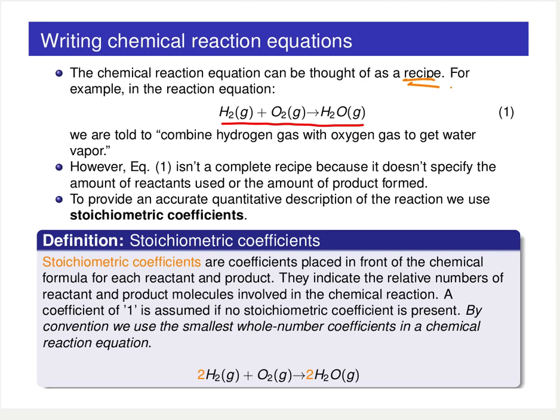The definition of stoichiometric coefficients are simply coefficients placed in front of the chemical formula for each one of those reactants and products. They indicate the relative numbers of reactants and product molecules involved in that chemical reaction. If there's only one of those given reactants or products present in that chemical reaction equation, then we don't actually write out the one. There's always an assumed one if you don't see a number. By convention, we always use the smallest whole number coefficients.